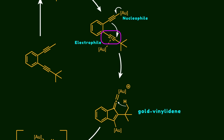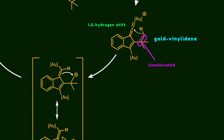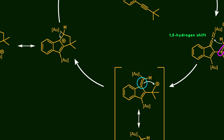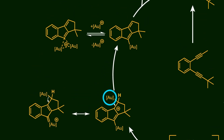The resulting gold-vinylidene intermediate is highly reactive and undergoes a 1,5-hydrogen shift. This step is very interesting because it represents a fascinating C-H activation of an unactivated alkyl group. The newly formed carbocationic center is stabilized through resonance facilitated by the coordination of the gold atom. In the next step, this double bond attacks the carbocationic center, generating another 5-membered ring. Due to the elimination of one gold atom, a mono-gold species is formed. Notably, this intermediate is in equilibrium with the gem-di-aurated compound, which plays a crucial role in the catalytic cycle.